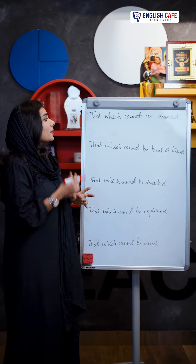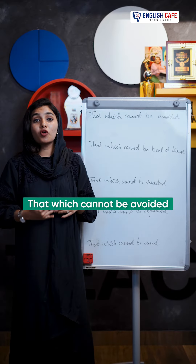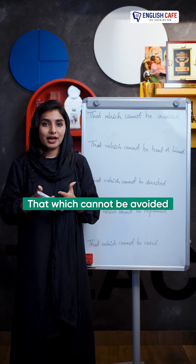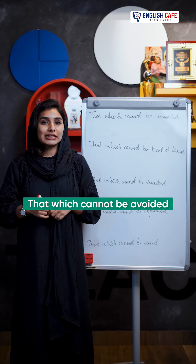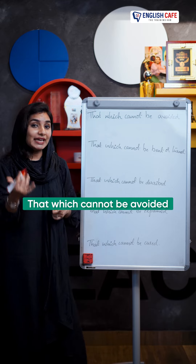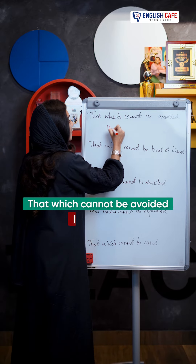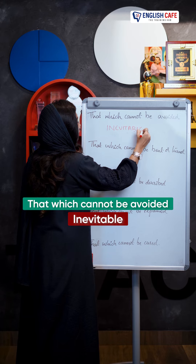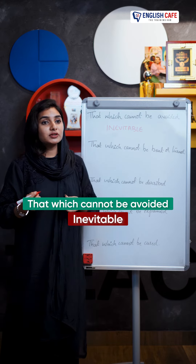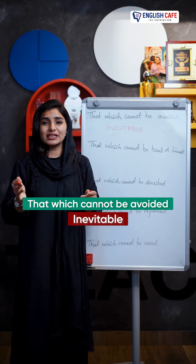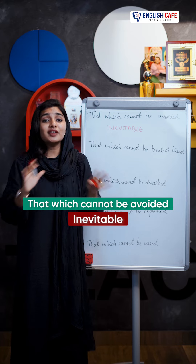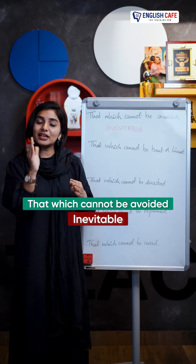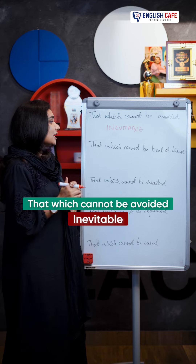The first situation is that which cannot be avoided. What do we say in English? It's called 'inevitable.' For example, you could say 'the situation is inevitable.' That is, we are inevitable.